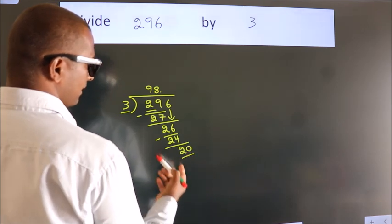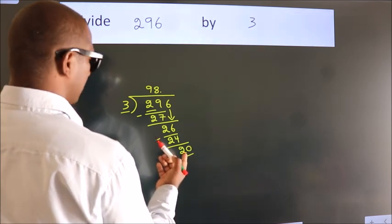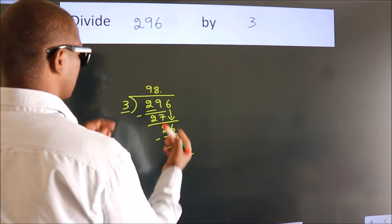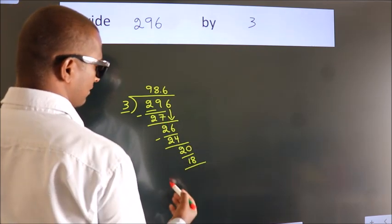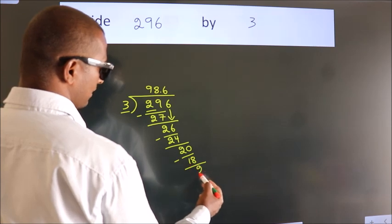So, 20. A number close to 20 in the 3 table is 3 sixes, 18. Now we subtract. We get 2.